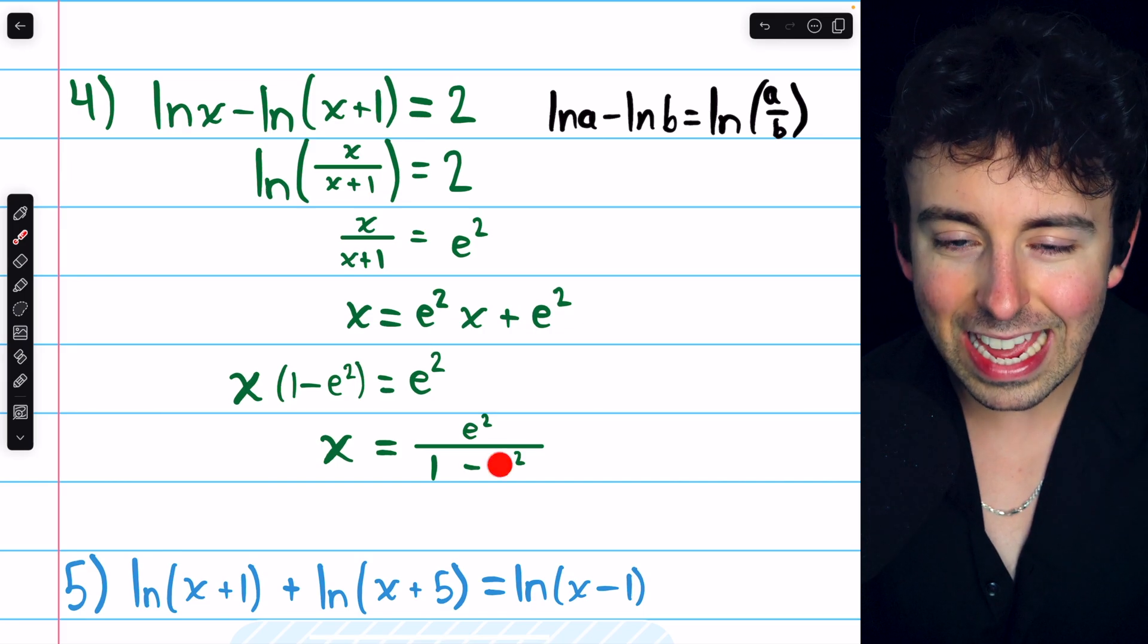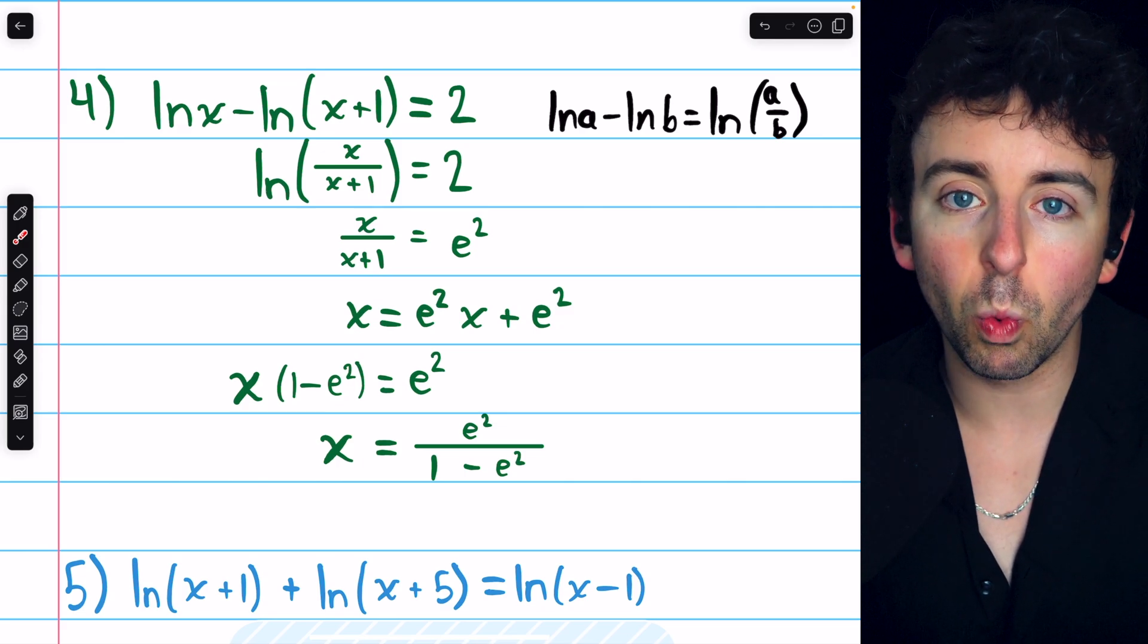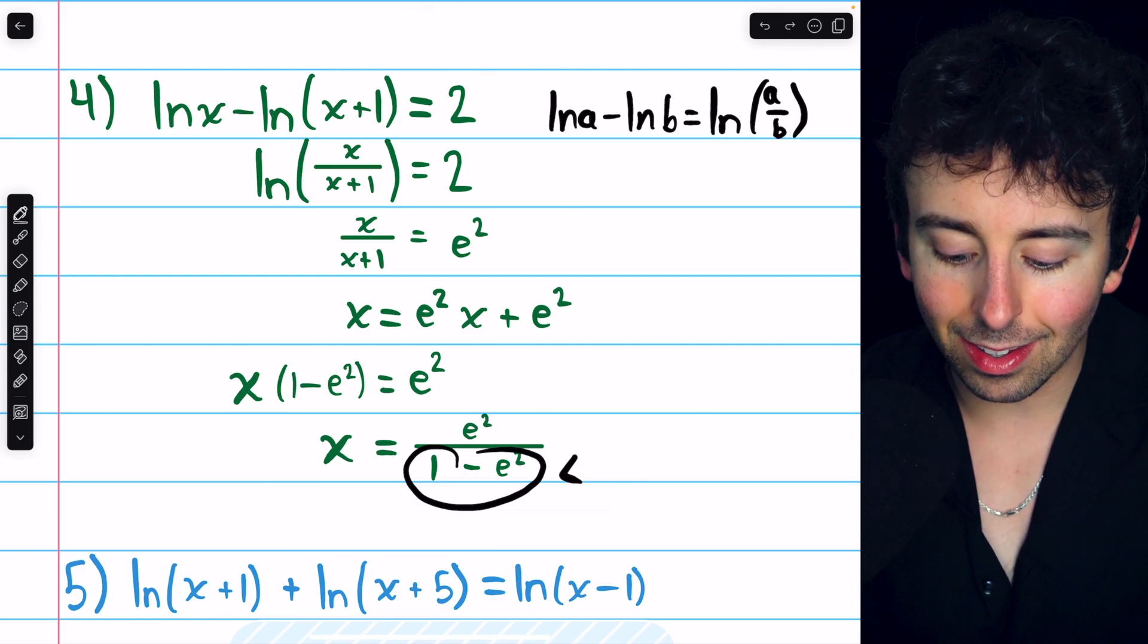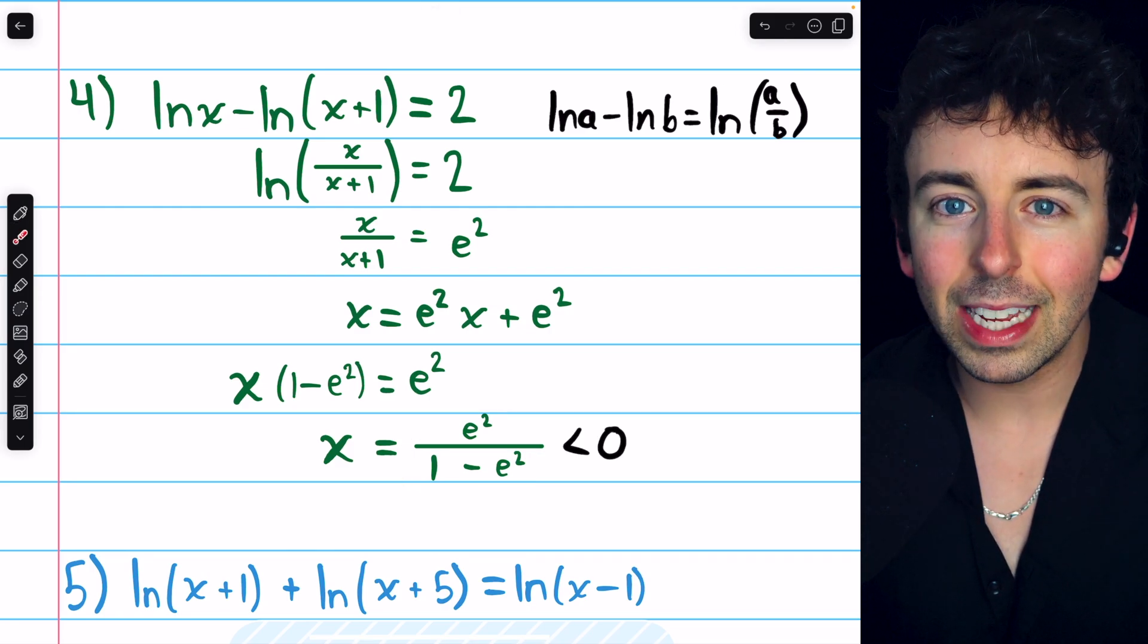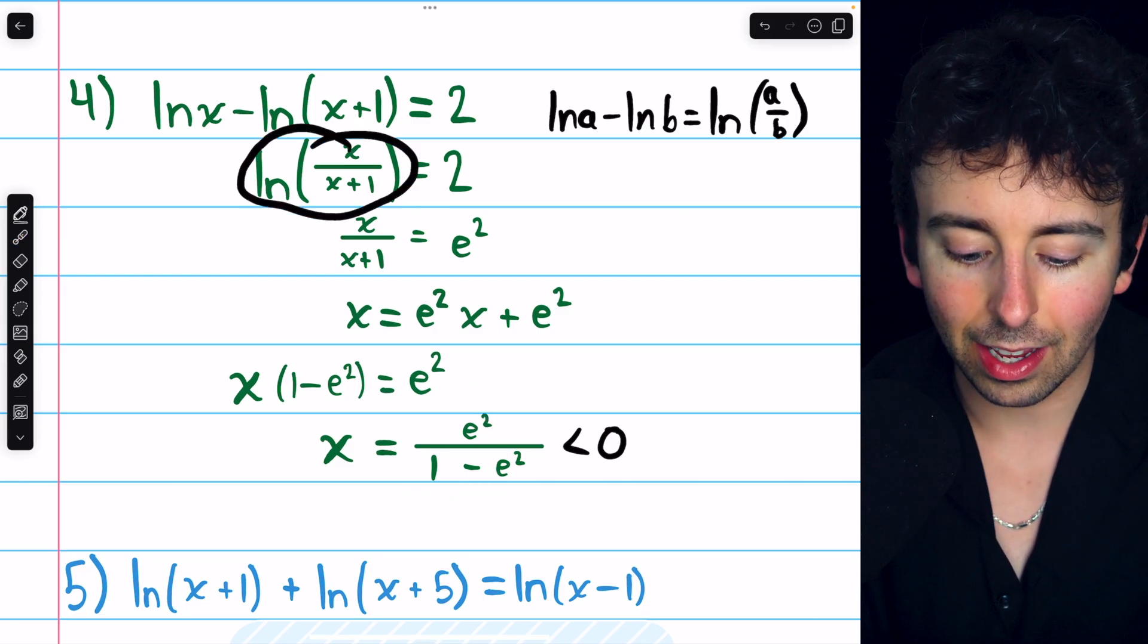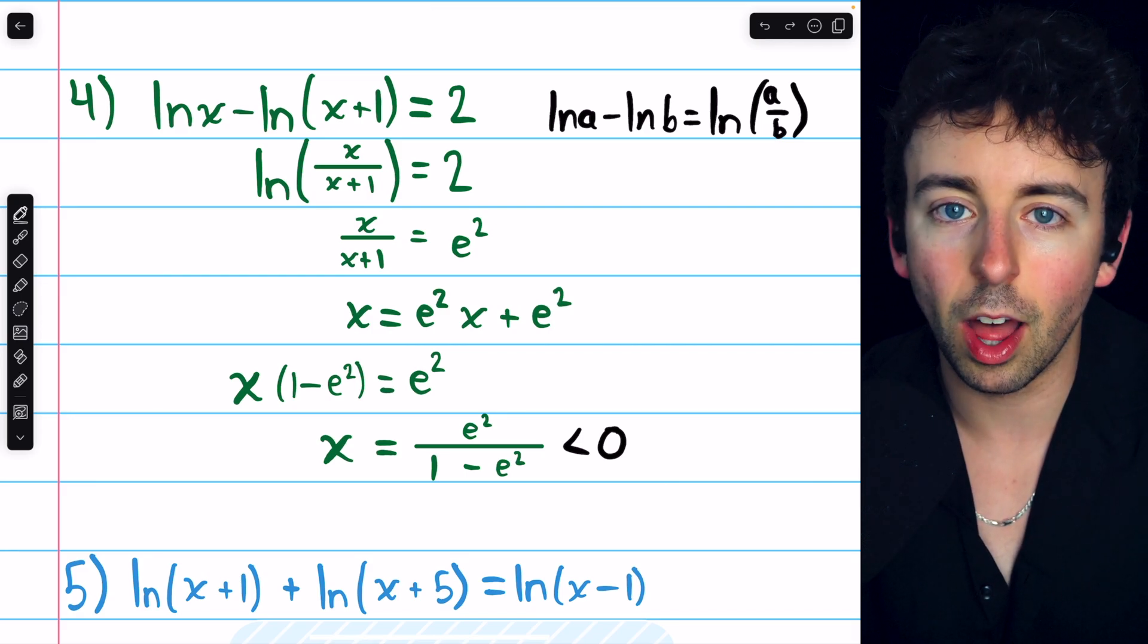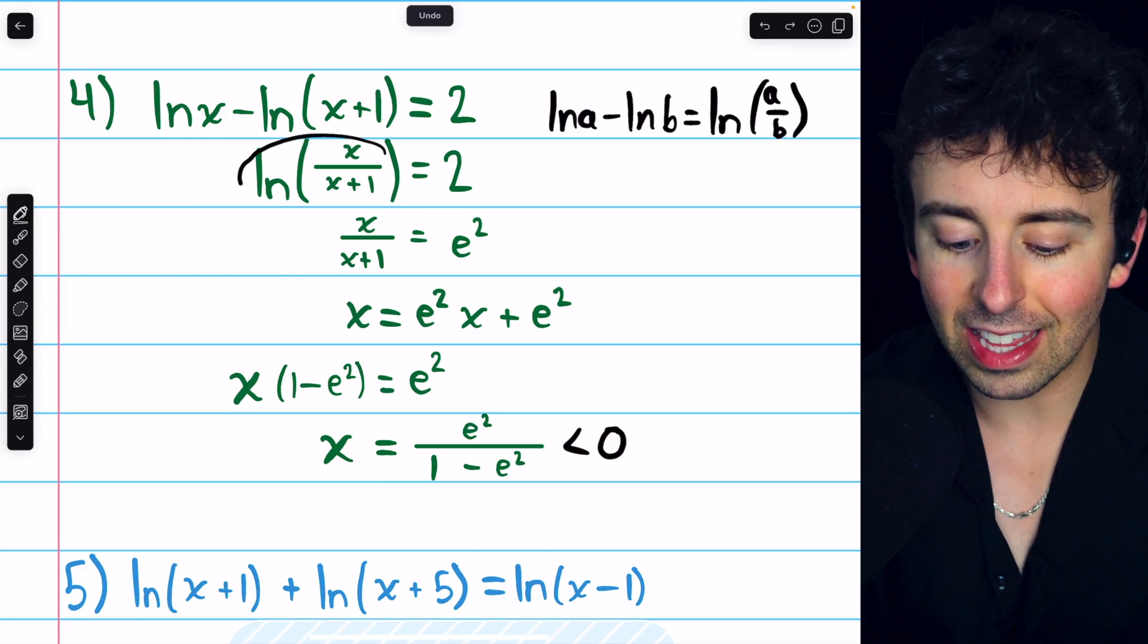But recall, e is two and change, so e squared is definitely bigger than one, which means this denominator is negative. Since the numerator is positive, that means this x value as a whole is negative. And that's a problem. It turns out that we can actually plug this x value into this. We can plug it into the natural log of x over x plus one because the numerator and denominator would both be negative, and so the negatives would cancel out. Natural log of a positive number is definitely defined. So this x value does make this equation true,